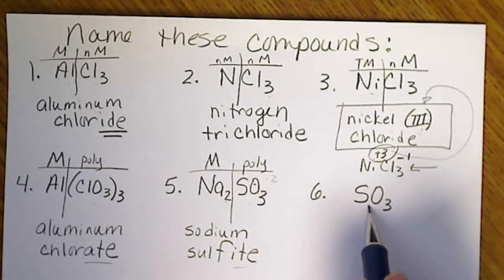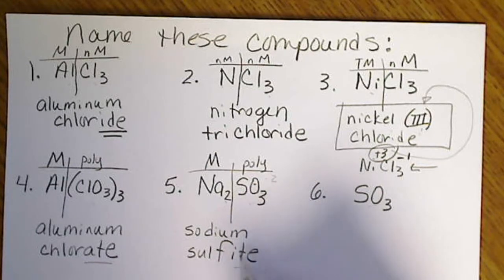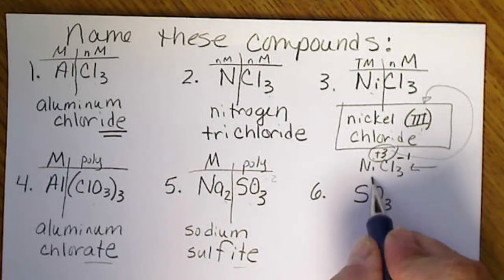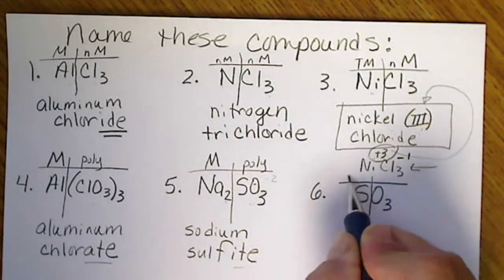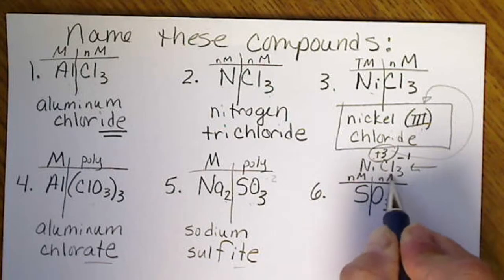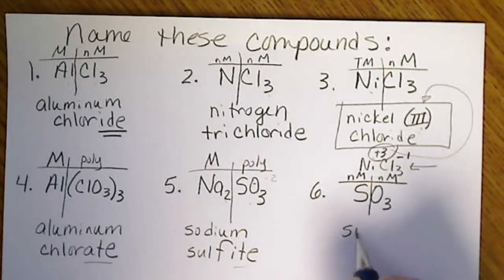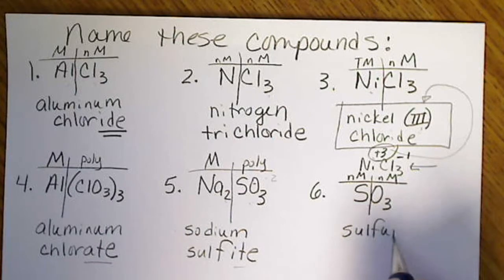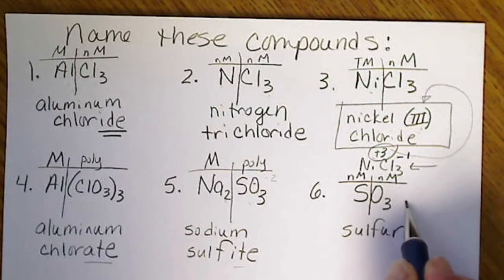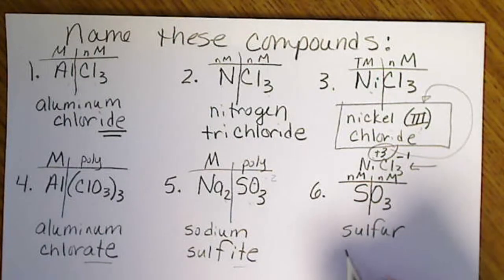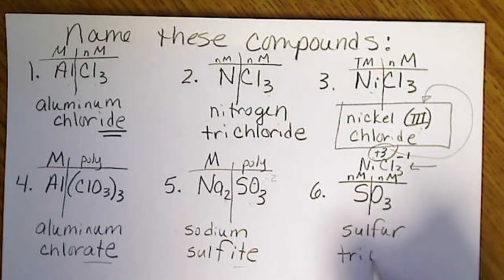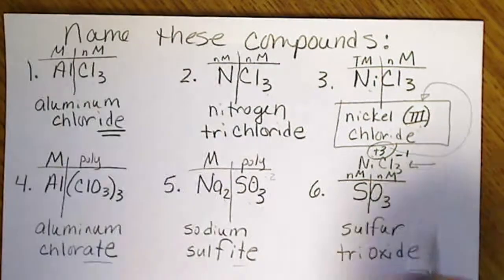This one I put here on purpose because SO3 here is sulfite. But SO3 all by itself, this is non-metal, non-metal. So this is a whole different kind of creature. This is a covalent compound. We use Greek prefixes. So this is sulfur trioxide, not a sulfite.